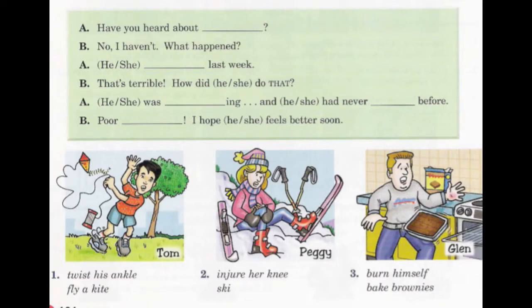Number one. Tom. Have you heard about Tom? No, I haven't. What happened? He twisted his ankle last week. That's terrible. How did he do that? He was flying a kite, and he had never flown a kite before. Poor Tom. I hope he feels better soon.